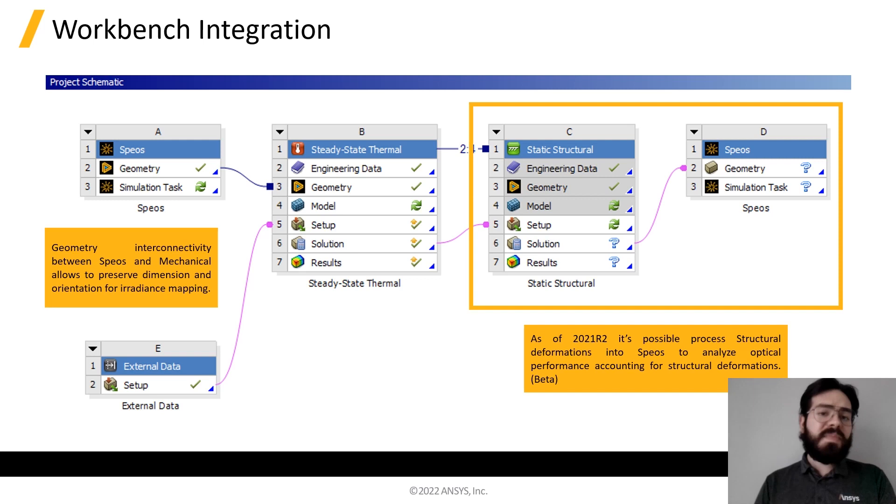Once the SPEOS simulation is complete, we can send the results to ANSYS Mechanical. This integration happens through the ANSYS Workbench, but OpticStudio or Model Center can be also used. We will import the SPEOS results as external data, mapping the nodal absorbed radiation as a heat flux in watts per square meter.